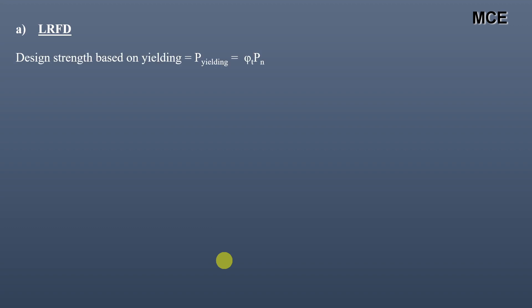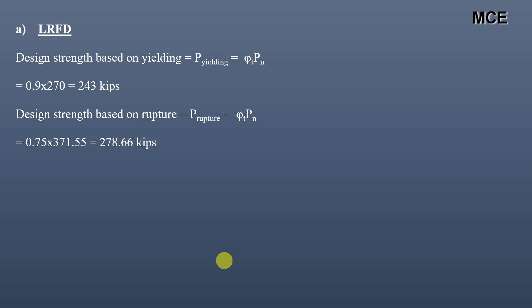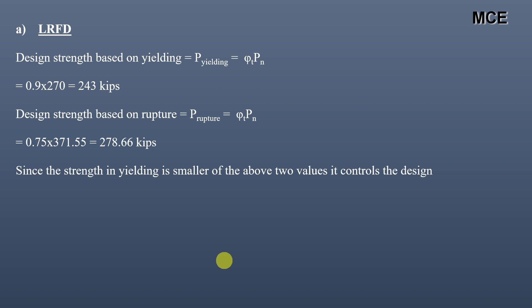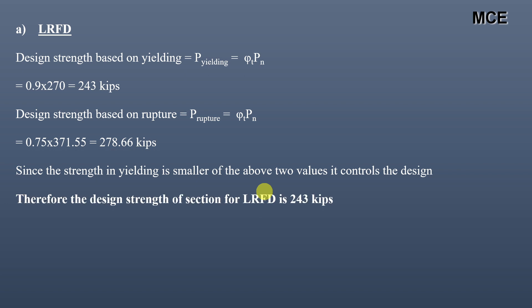For LRFD, the design strength based on yielding is φ × P_n = 0.9 × 270 = 243 kips. The design strength based on rupture is φ × P_n = 0.75 × 371.55 = 278.66 kips. The yielding strength is the smaller of the two values, so it controls the design. Therefore the LRFD design strength is 243 kips.